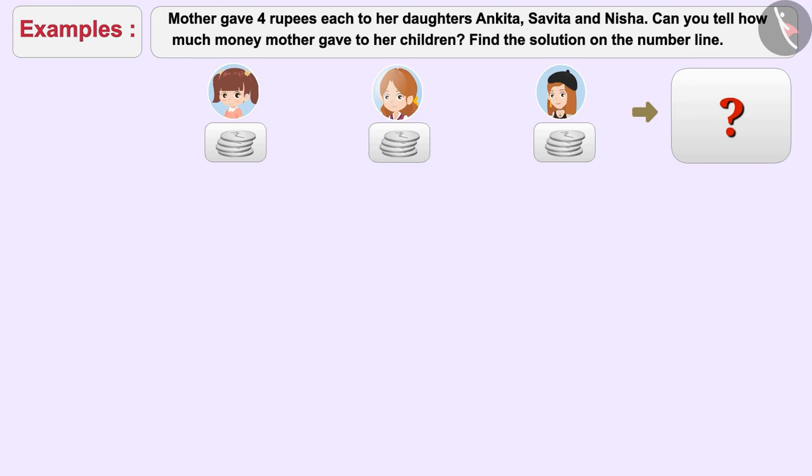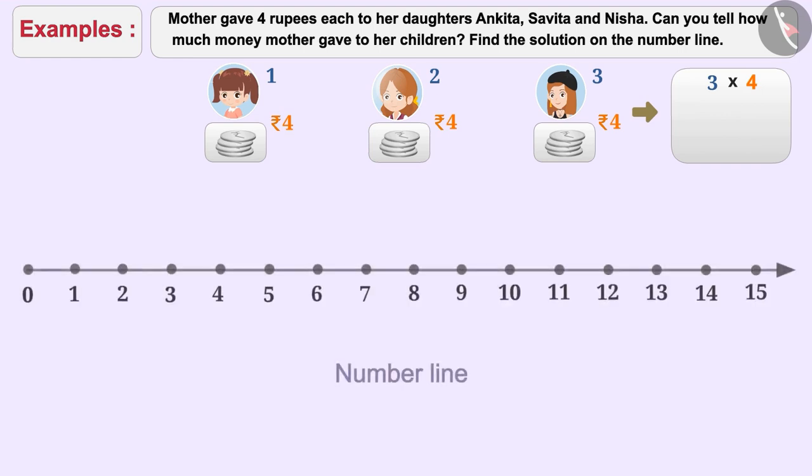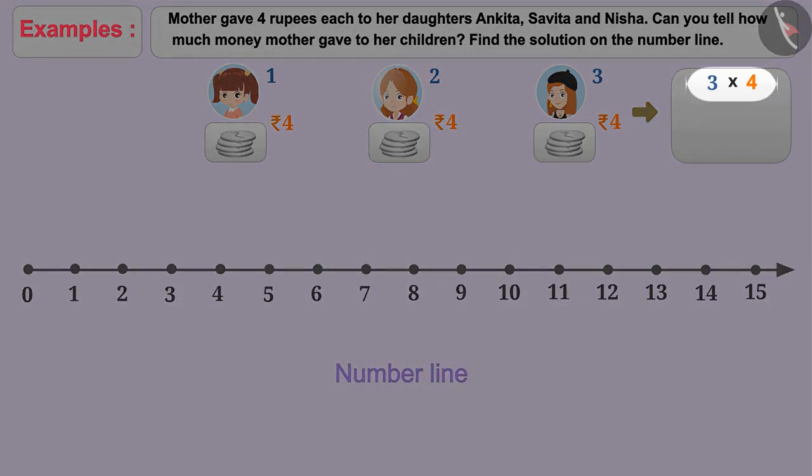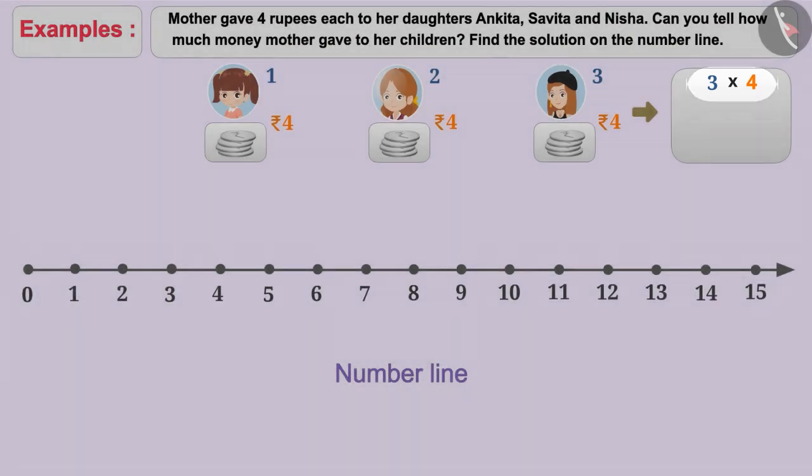In the example given, the total number of children is three and each one gets four rupees. Therefore, the total amount can be expressed as three multiplied by four. Let's find the solution of the multiplication three multiplied by four on the number line.